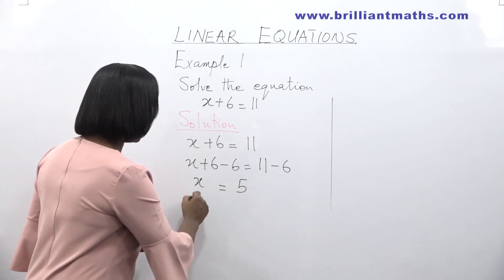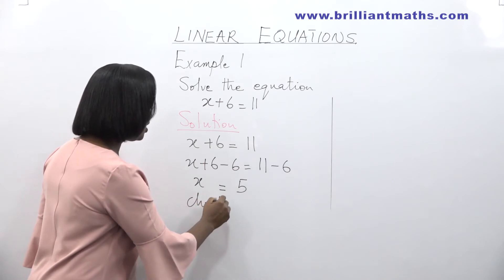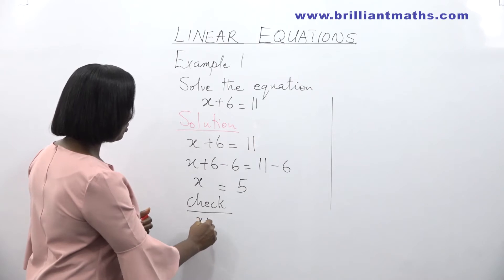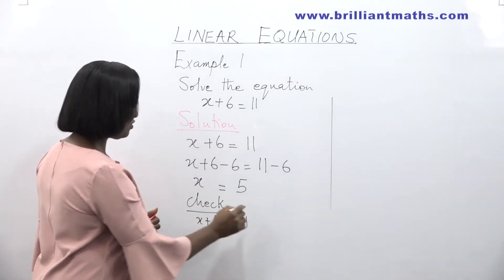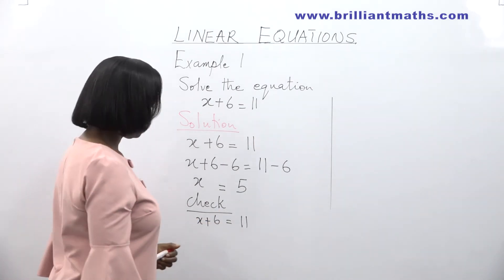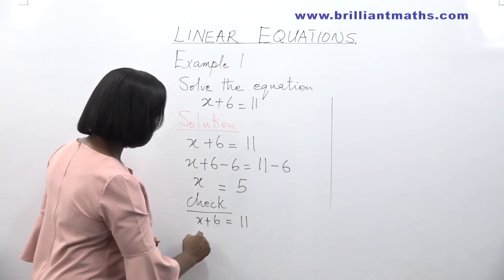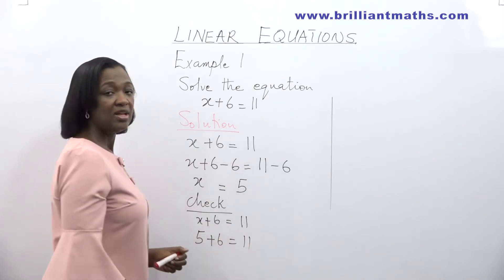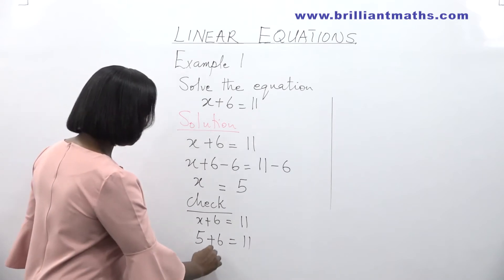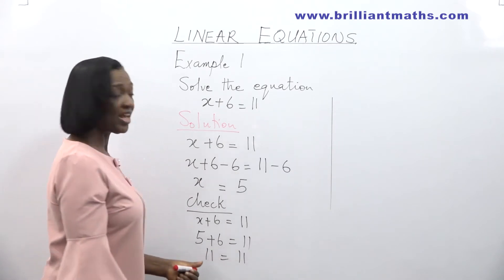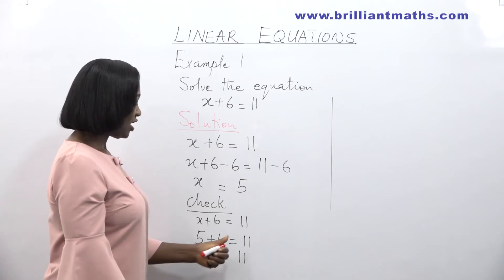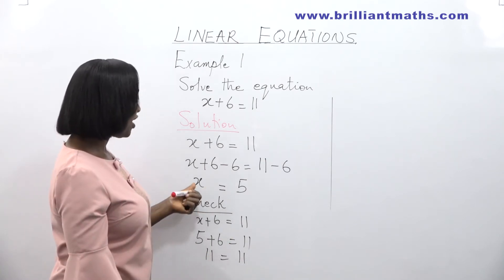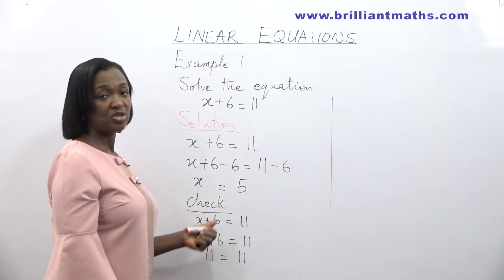You could also check to see if your answer is correct. To check: x plus 6 is equal to 11. If x is 5, then 5 plus 6 is equal to 11. We can see that 11 is equal to 11, showing that the left hand side of the equation equals the right hand side. So our value of x which is equal to 5 is correct.